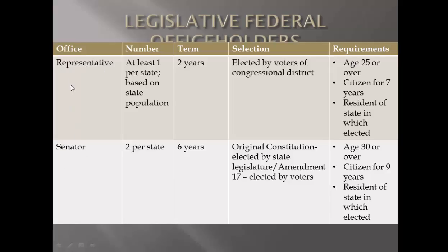Representatives are based on population — you should remember that from the Great Compromise. For as many people as live in that state, you get that many representatives. States with a very large population get more. There are 435 representatives total; states like Texas, Florida, New York, and California have a lot. When elected to the House of Representatives, you serve for two years and are elected by the voters in your district. Each state is divided into however many districts it has representatives. To qualify, you must be 25 years or older, a citizen for seven years — not necessarily natural-born — and you must live in the state you were elected from.